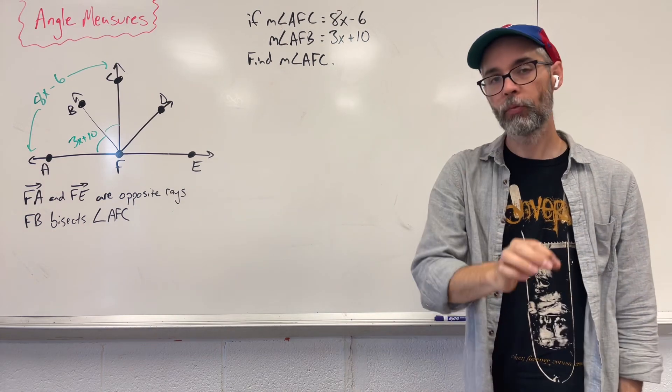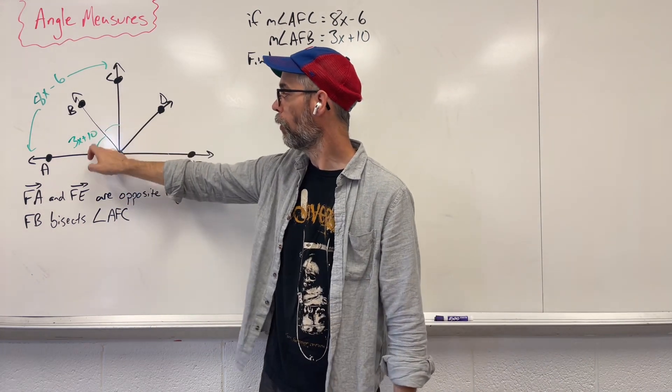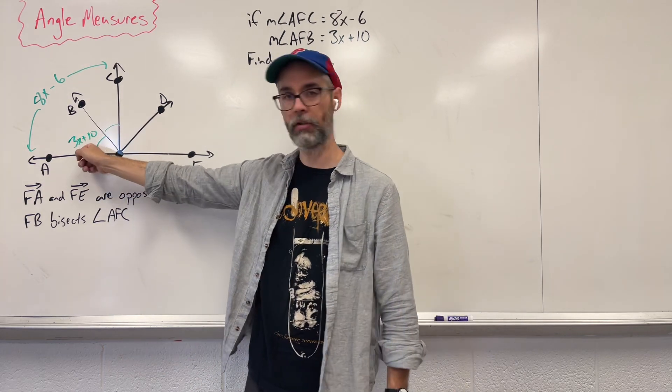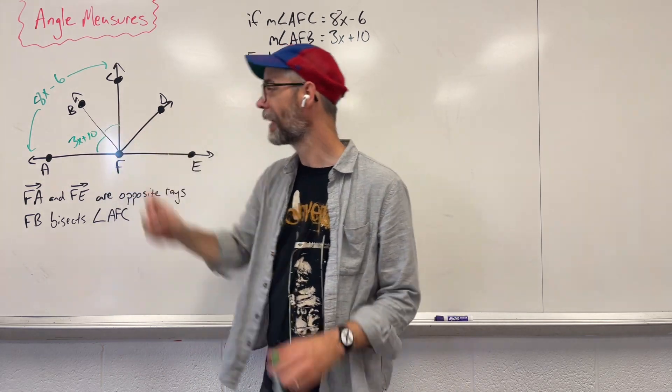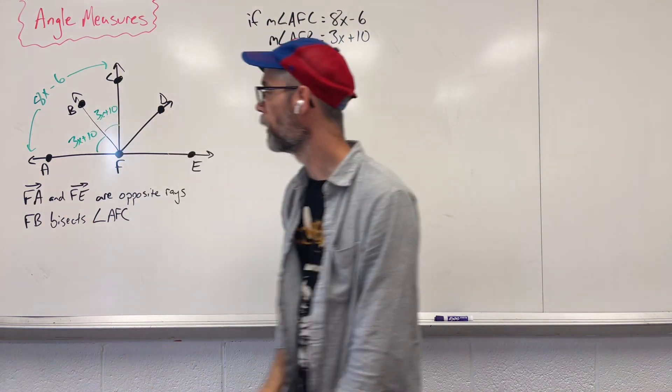So because we have a bisector, both of these have the same value. So if I know that this is 3X plus 10, that side's also got to be 3X plus 10. So we label it the same.